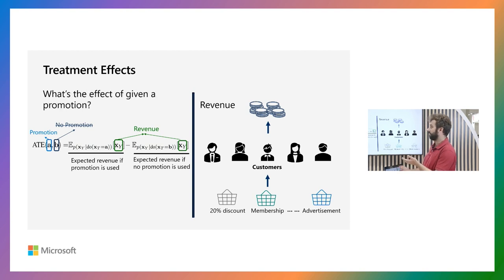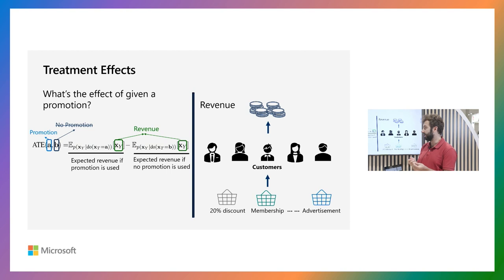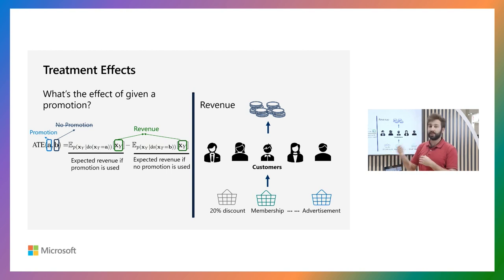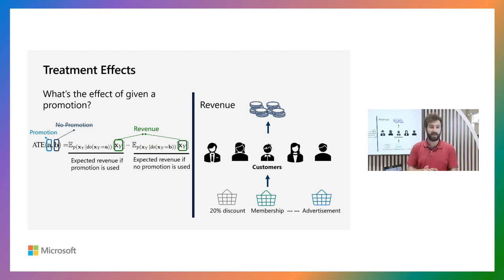Particularly in the sales scenario, we would ask: what's the effect of a given promotion? We can look at an entity called an average treatment effect, which is the difference of the average expected outcome of giving a promotion versus the average expected outcome of not giving the promotion. By looking at the difference between those two things, you can estimate how good it is to perform this promotion, and you can then use that for decision making.